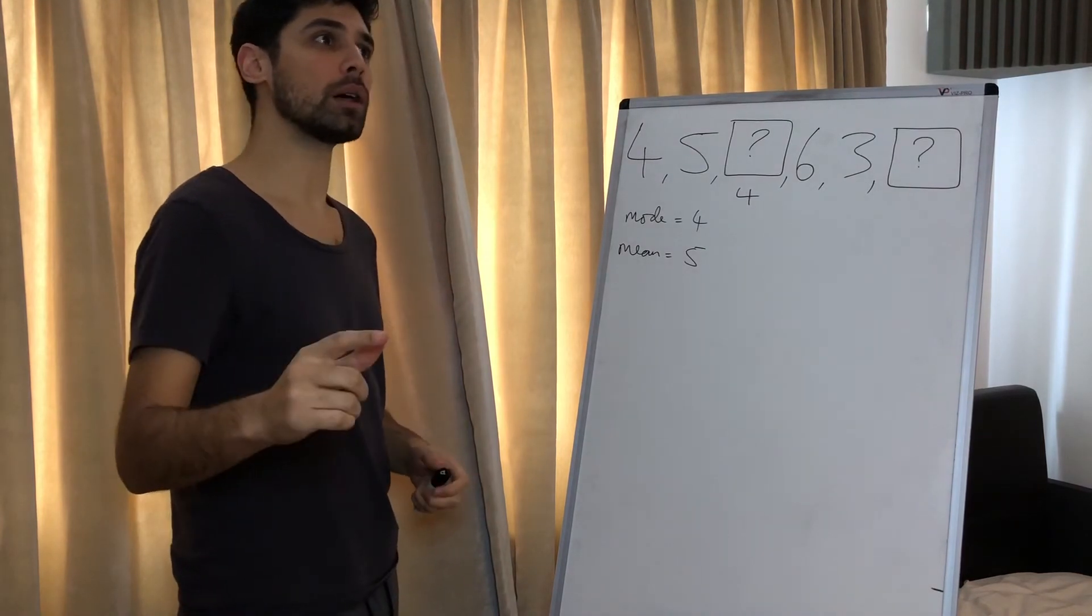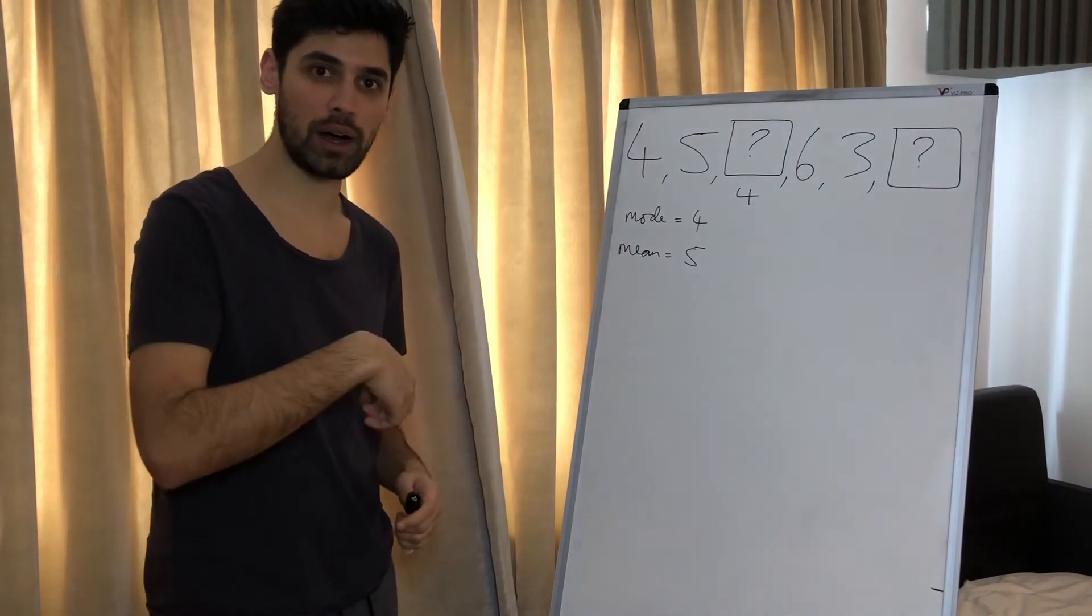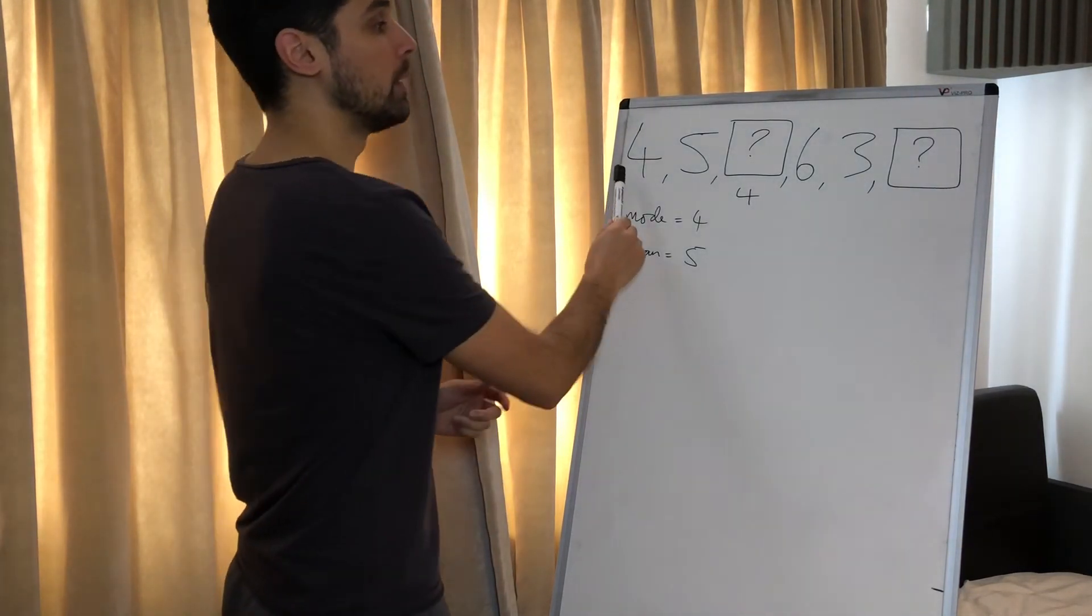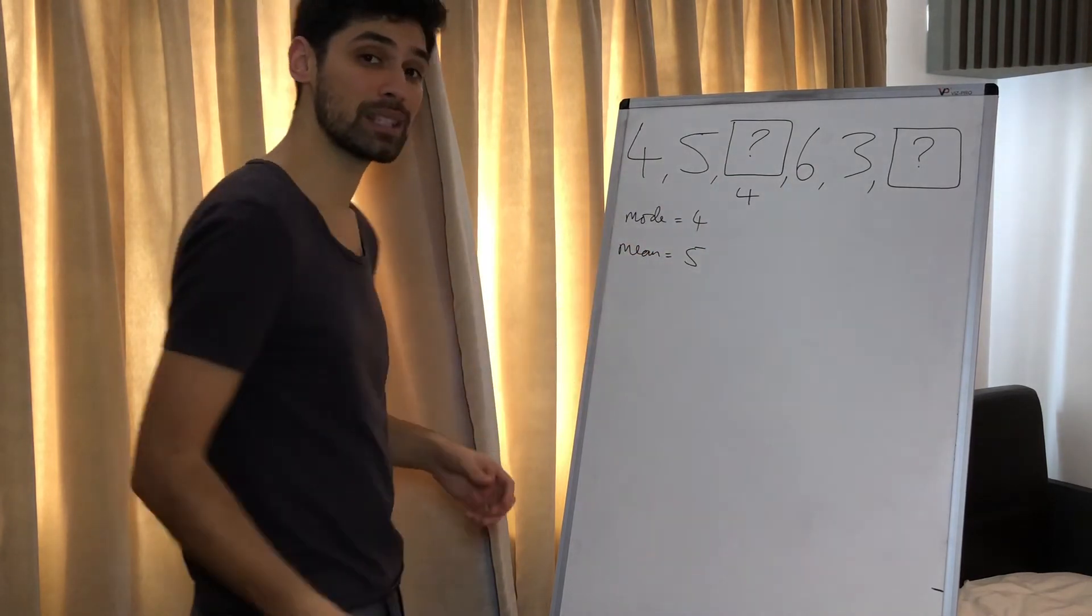So what must that total be? What number when we divide by six gives us five? Thirty. Thirty divided by six equals five. So we now know that these numbers have to add together to make thirty.